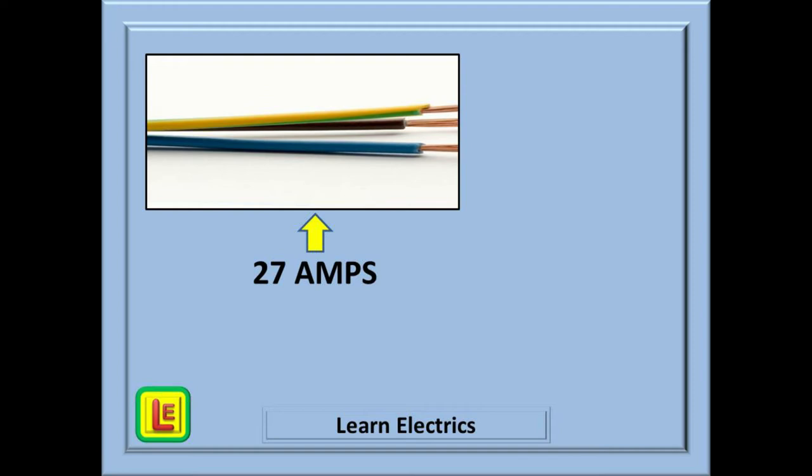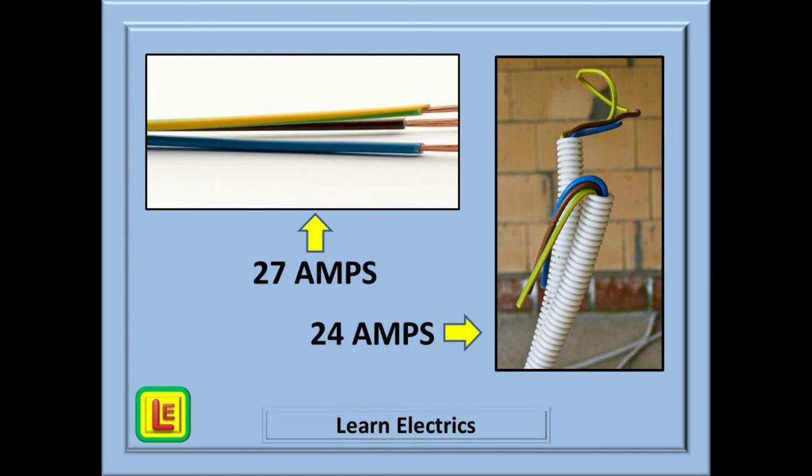This slide shows 2.5mm PVC singles installed in a ducting system with lots of space and free air, where it is easy to lose heat and they may not reach the limiting temperature of 70 degrees centigrade until 27 amps or more passes through them. But if they are installed in plastic conduit, as shown here, we may need to reduce the current to 24 amps or less to prevent overheating. If we absolutely needed the full 27 amps because the machine they are connected to draws close to 27 amps, then we have a problem. Fortunately, the tables will tell us to what size we must increase the cable to stay within our temperature limits.